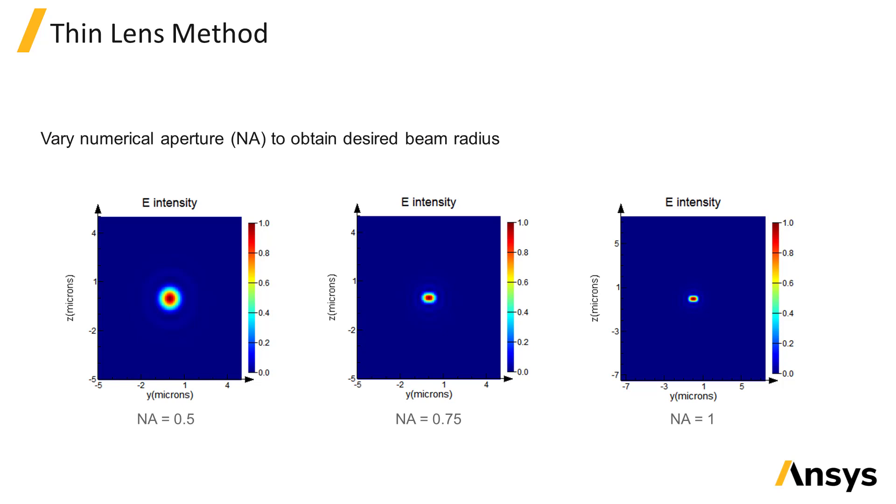And vary the numerical aperture until the calculated beam has the desired waist radius. The calculated beam profile can be viewed by clicking the Visualize Beam Data button in the Beam Options tab.